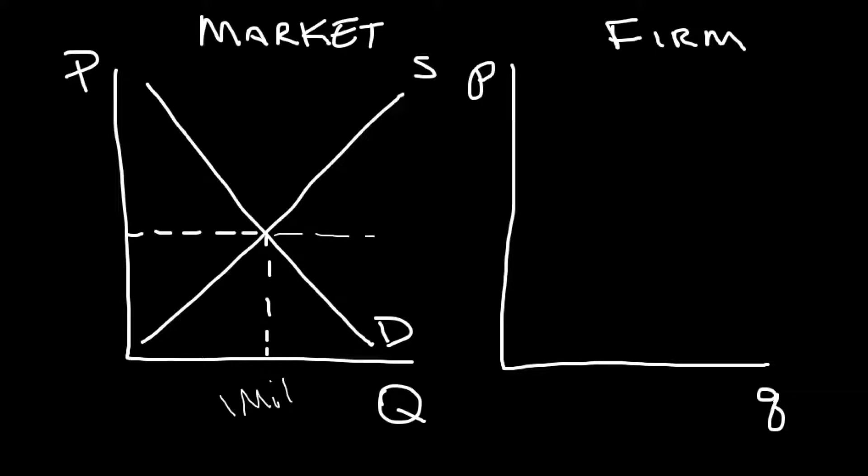And we call them price takers because whatever's going on over here in this market, all those factors we've learned that can shift supply and demand, income changes can affect demand, if taste and preferences changes, whatever's going on, all those things happen and the demand curve and the supply curve intersect and determine a market price. And let's say that the market price is a dollar right now. And so what happens from the point of view of the firm is that dollar comes from the market and it just kind of comes down from above. And that's why we call them price takers. They're just sort of taking the price as it's given.